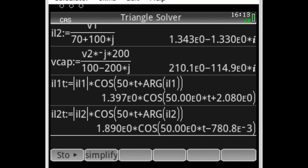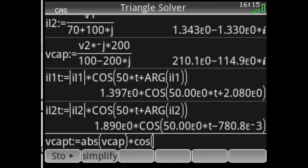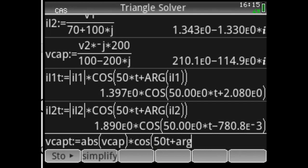And what is the voltage in the capacitor? The voltage in the capacitor as a function of time is absolute value of V cap multiplied by cos(50t) plus the argument of V cap. That is V cap as a function of time.